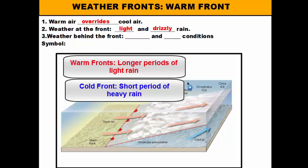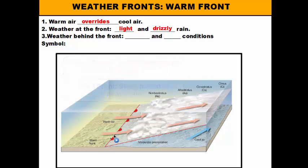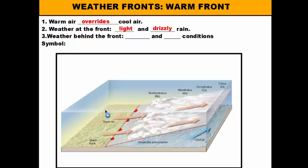As this front moves — here's our front where the warm air meets the cold air — we have our weather at the front. Behind the front in the warm air we have no clouds, so we're going to have clear conditions, and because it's warm we're going to have warmer temperatures. Warm and clear conditions once the front passes through.